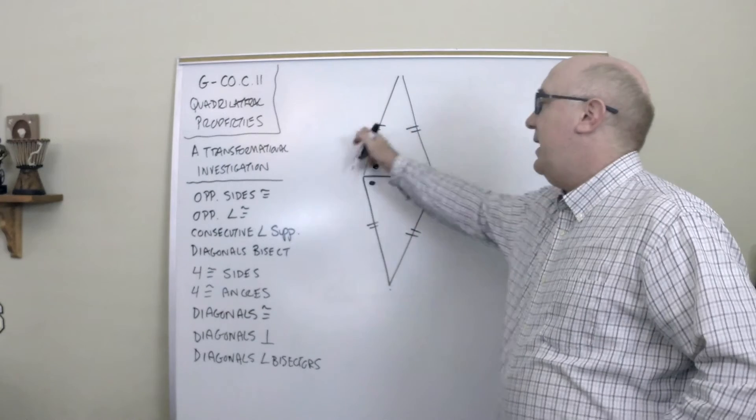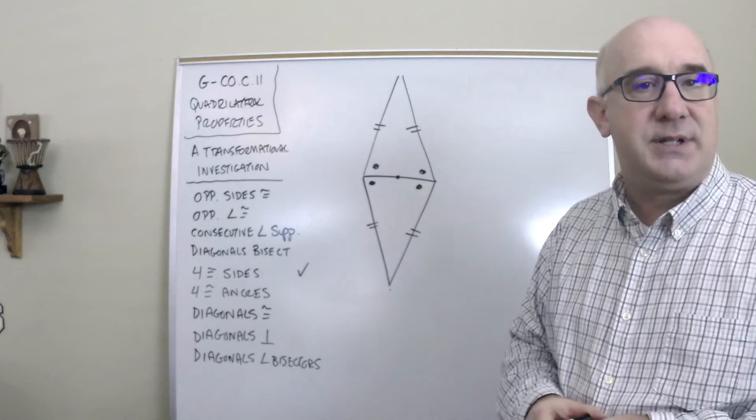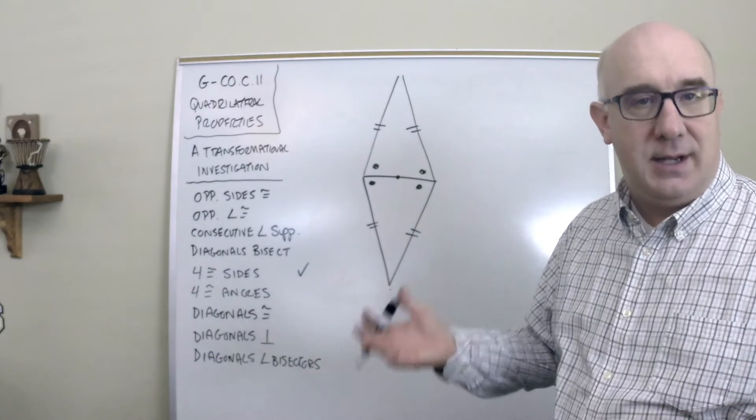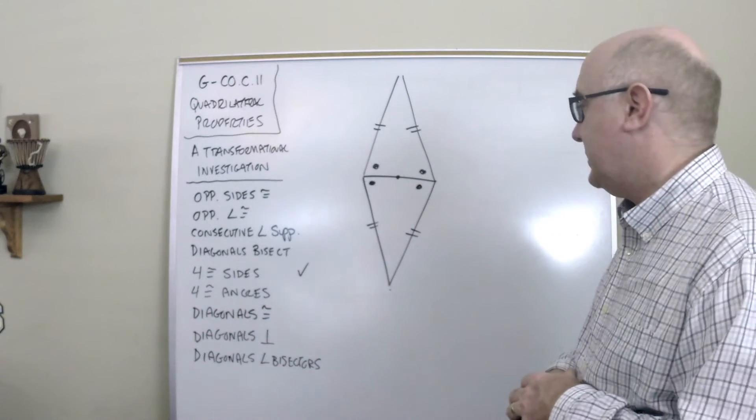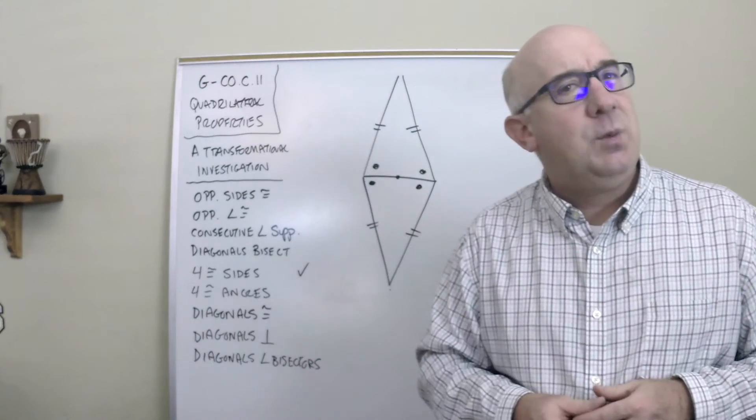Now this is a quadrilateral. What kind of quadrilateral is it? Well, I notice it has four equal sides. So first of all, by definition, a rhombus has four equal sides, so this is a rhombus.